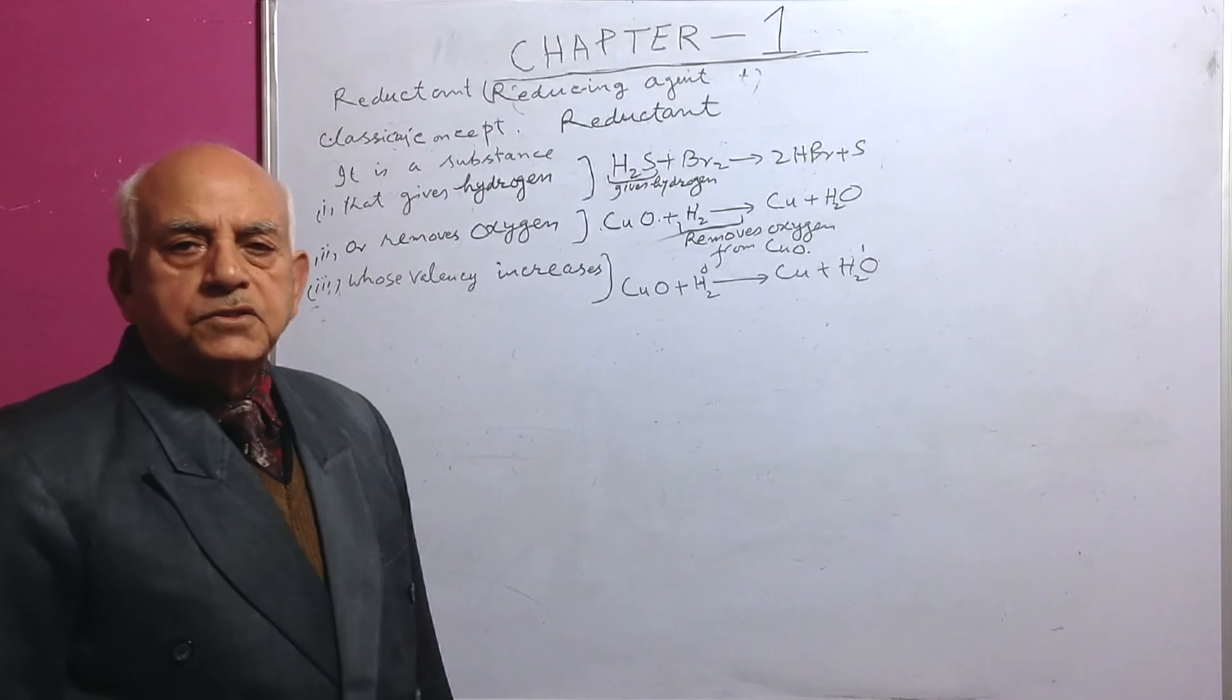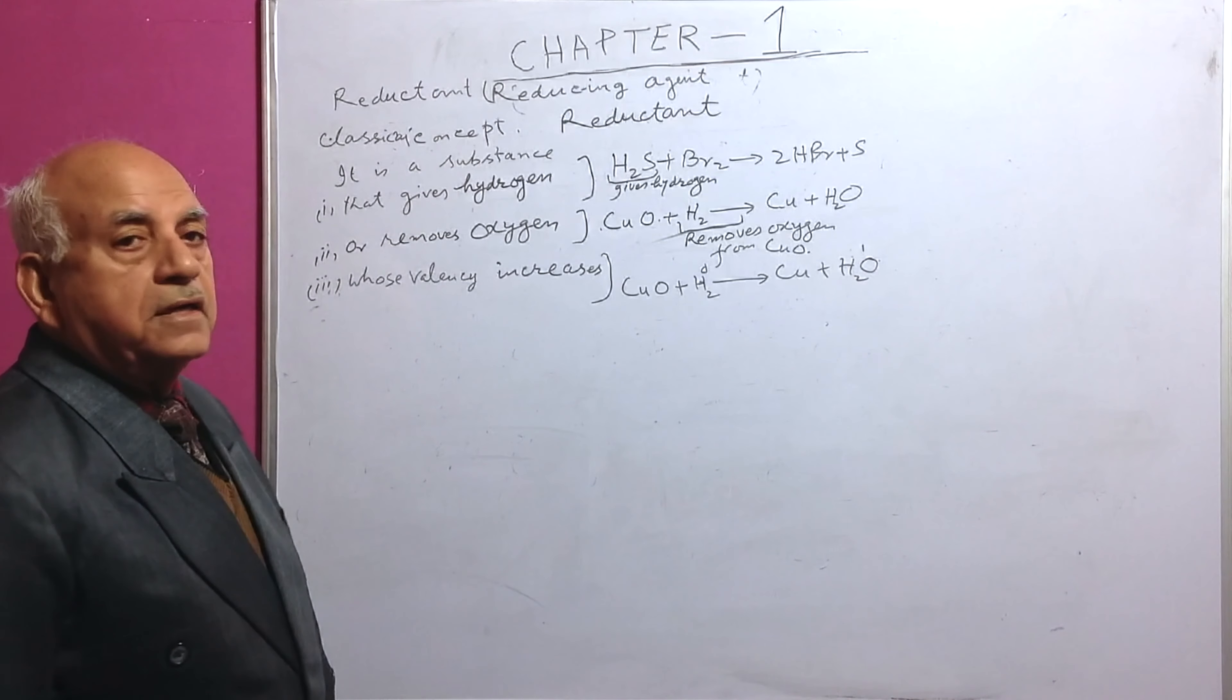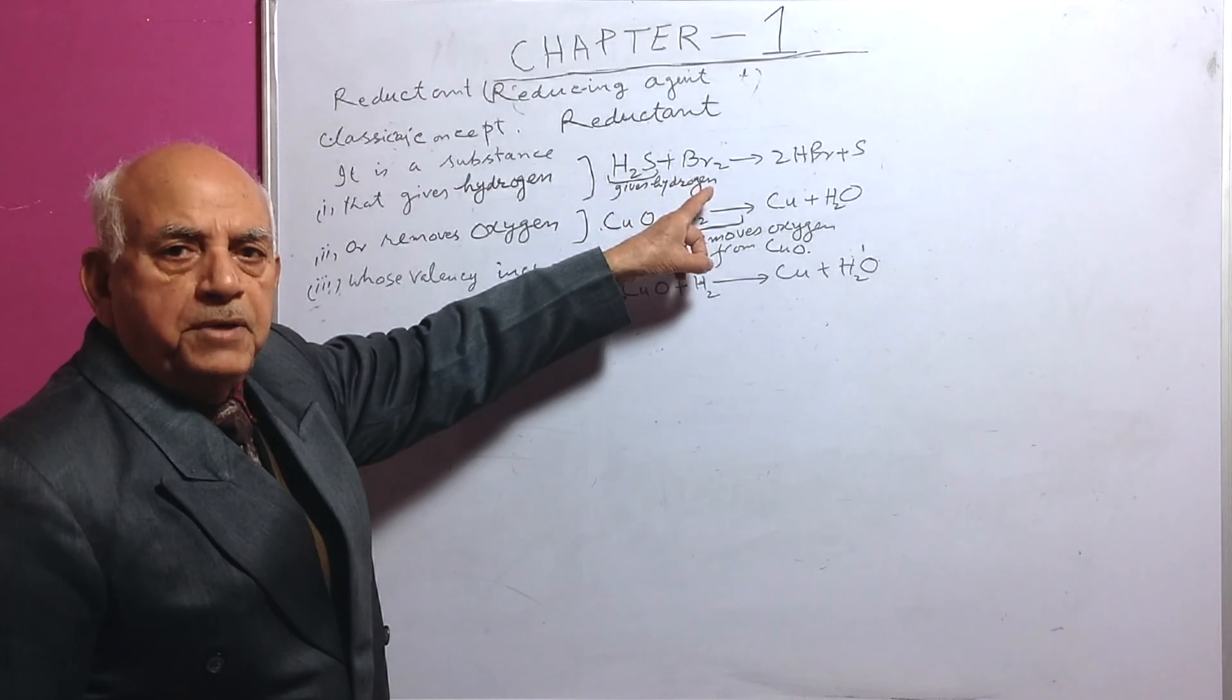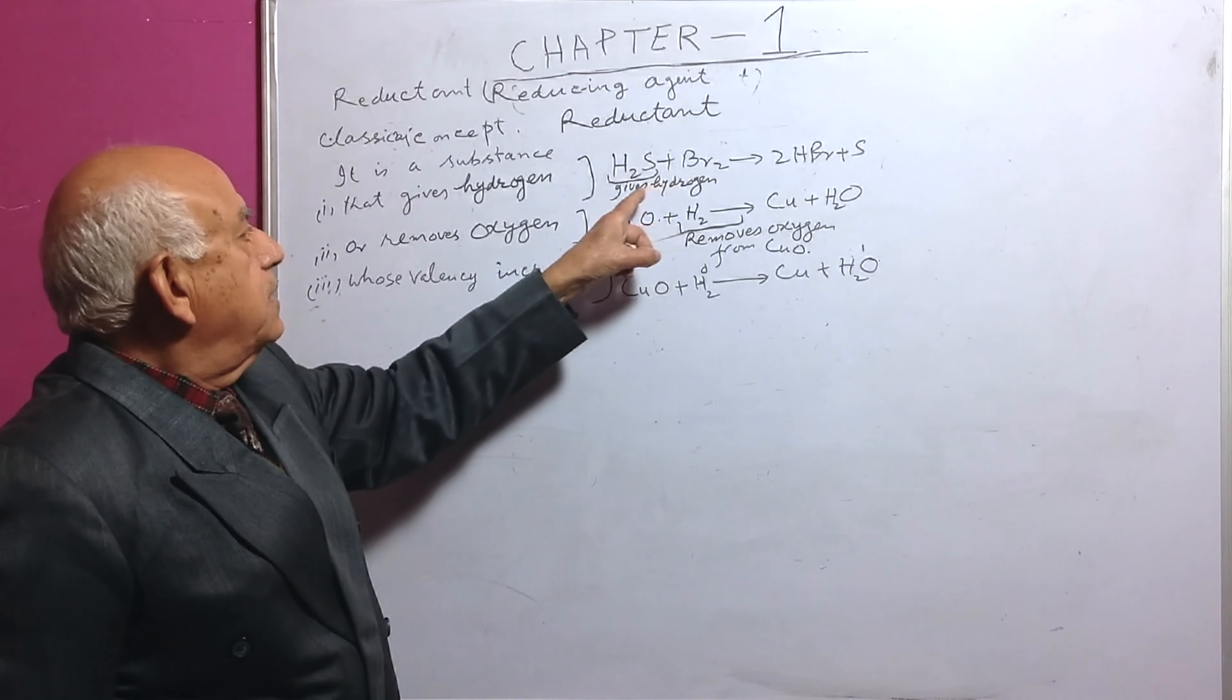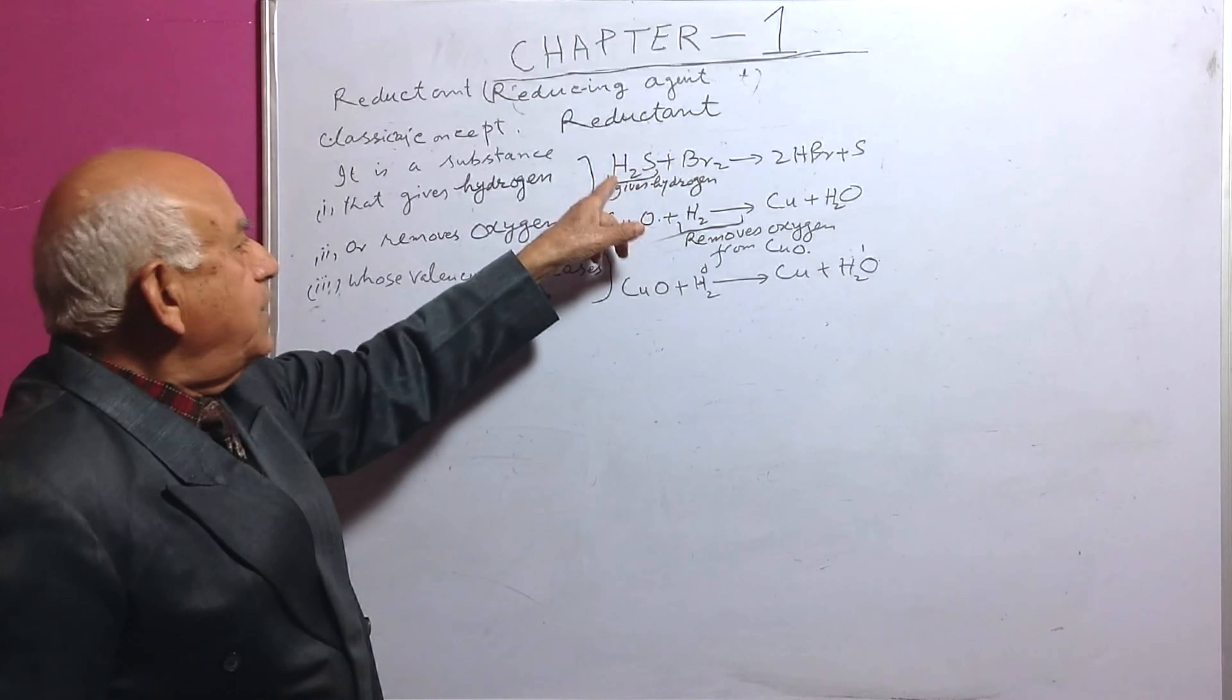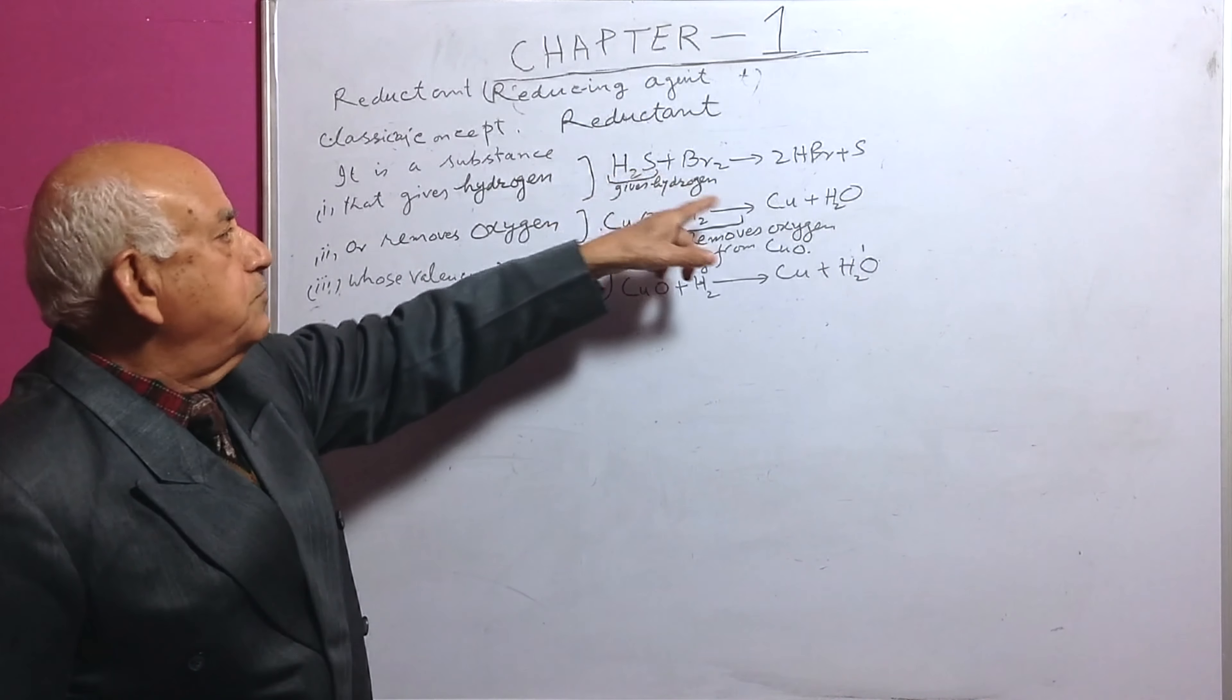Good morning dear students, we shall study today the classical concept of reductant. A reductant is a substance that gives hydrogen. I have written this reaction: H2S plus bromine gives 2HBr plus sulfur. Just see in this case, H2S has given hydrogen to bromine.